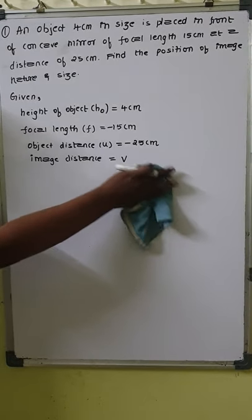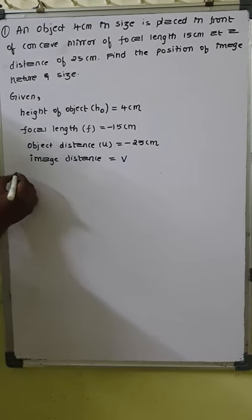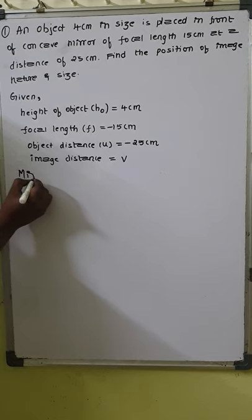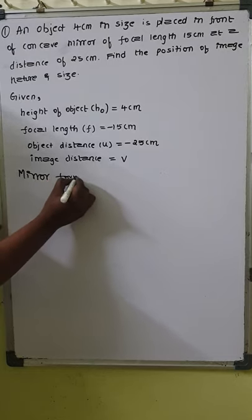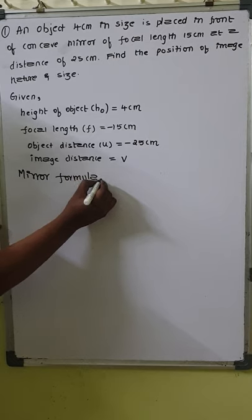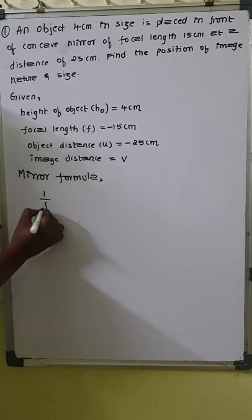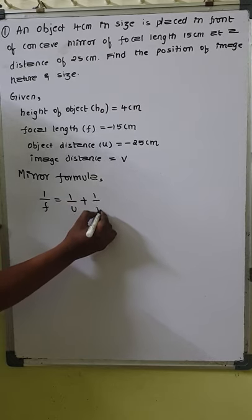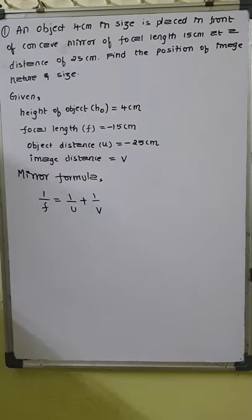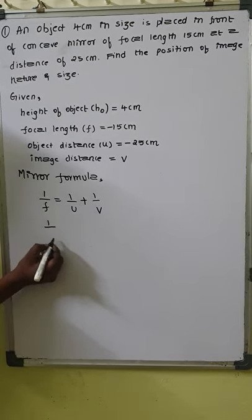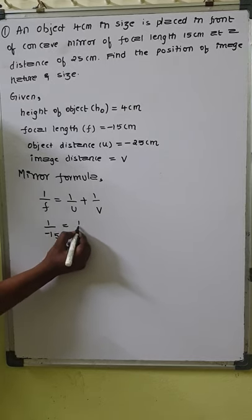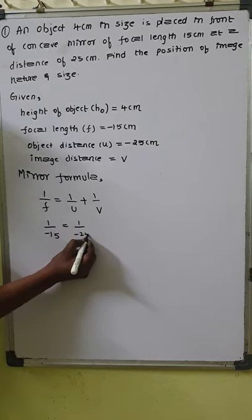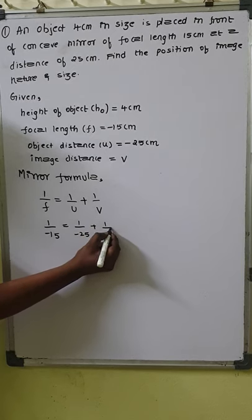Now let us solve the problem. To solve the problem, we use the mirror formula: 1 by f equals 1 by u plus 1 by v. Let us do the substitution — up to here it is physics, from here it is the mathematical part. 1 by f: f is minus 15, equals 1 by u: u is minus 25, plus 1 by v which we do not know.